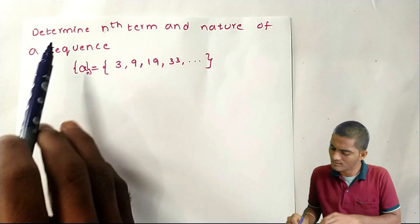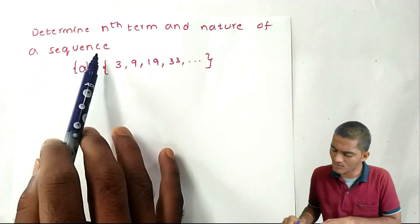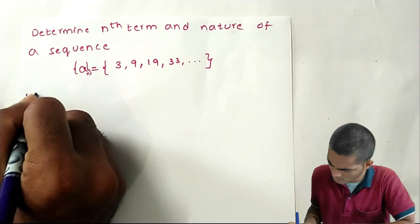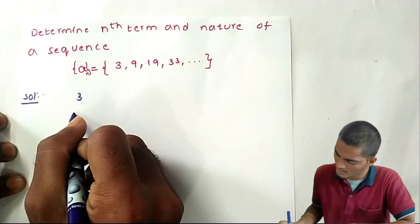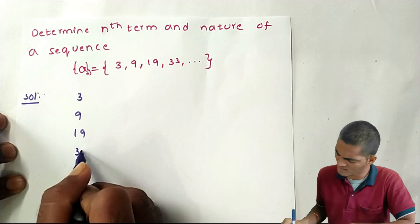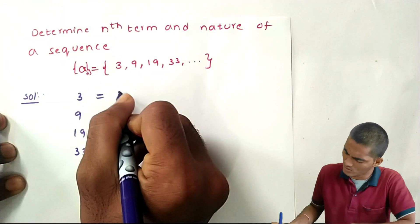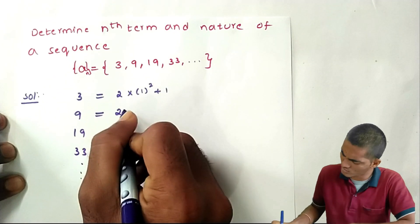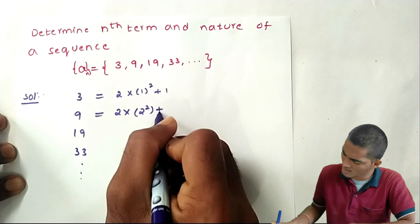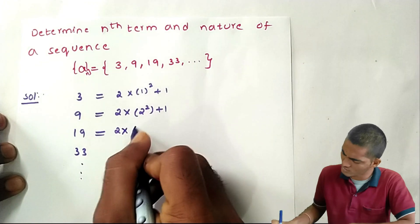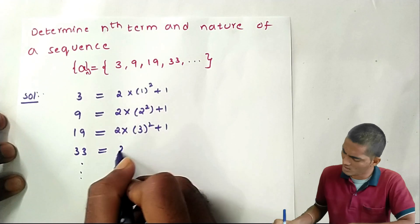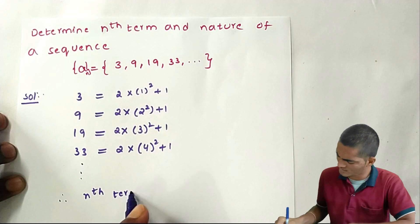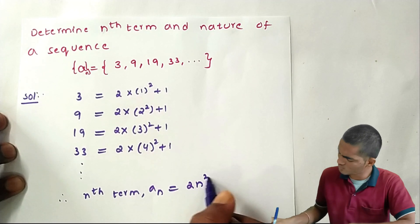The next example: determine the nth term and nature of the sequence 3, 9, 19, 33, and so on. The first term is 3, second is 9, third is 19, and fourth is 33. Observing the pattern: 2(1²)+1 = 3, 2(2²)+1 = 9, 2(3²)+1 = 19, 2(4²)+1 = 33, and so on. Therefore, the nth term of this sequence is a_n = 2n² + 1.